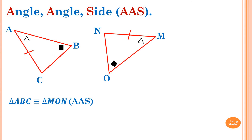Angle Angle Side (AAS): this angle and angle B are equal to their corresponding angles, and the corresponding sides are equal. Two corresponding angles and one corresponding side are equal, so triangle ABC is congruent to triangle MON, and the rule is AAS.